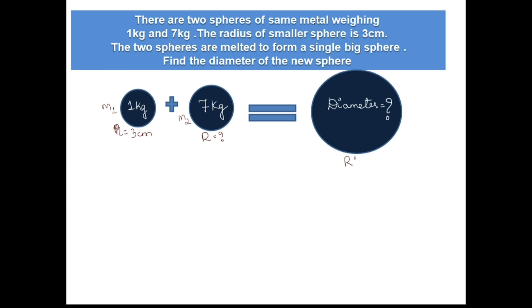The question is: There are two spheres of same metal weighing 1 kg and 7 kg. The radius of the smaller sphere is 3 centimeters. The two spheres are melted to form a single big sphere. Find the diameter of the new sphere.